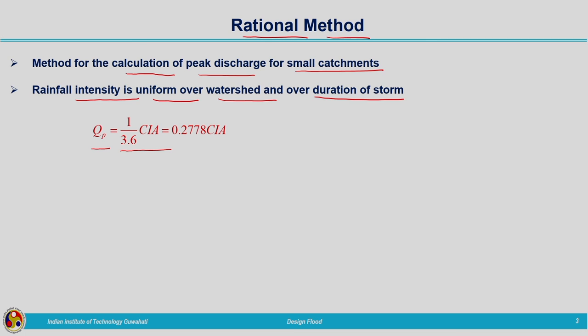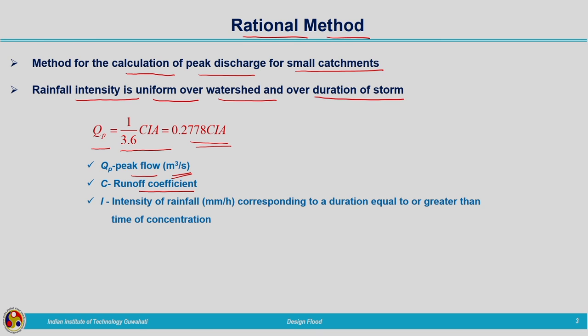The rational method formula is: Qp = (1/3.6) × C × i × A, which can also be written as 0.2778 × C × i × A. Here, Qp is the peak flow in m³/s, C is the runoff coefficient representing land use characteristics of the watershed, and i is the intensity of rainfall in mm/hr corresponding to a duration equal to or greater than the time of concentration.